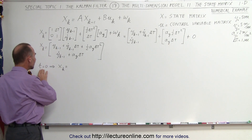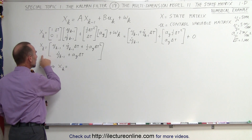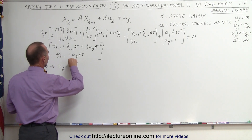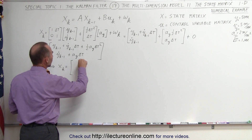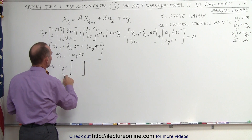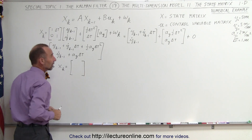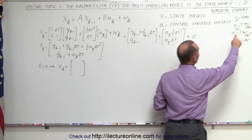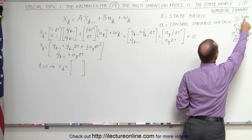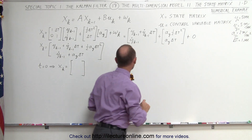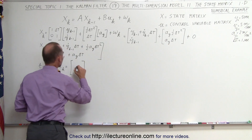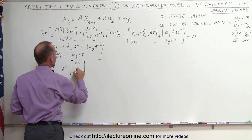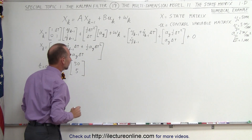When time is equal to 0, our state matrix will look as follows. We have the position in the Y direction and the velocity in the Y direction. Position is 50 meters, velocity is 5 meters per second. So the state matrix will look like this: 50 and 5.